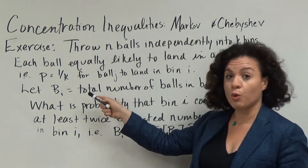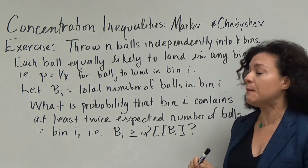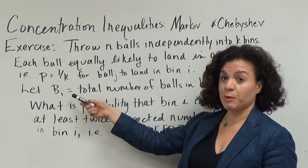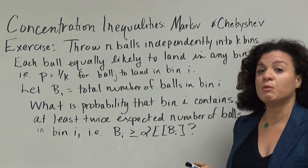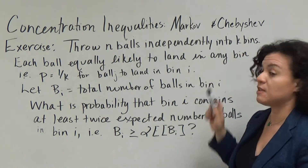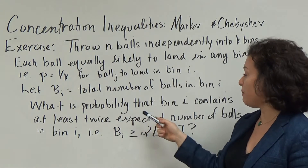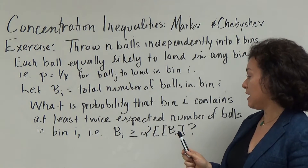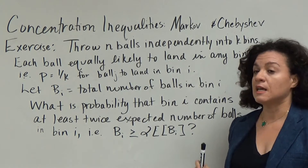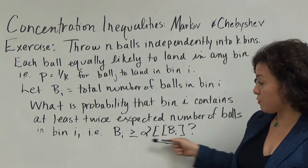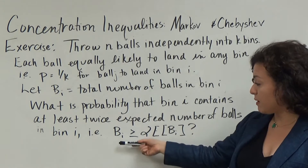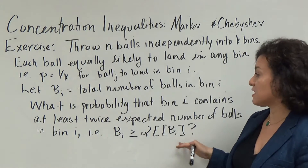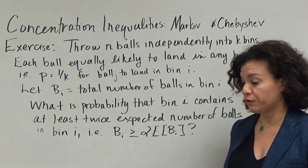We let the total number of balls in bin i be the random variable bi. The question we want to answer, applying Markov's and Chebyshev's inequality, is: what is the probability that bin i contains at least twice the expected number of balls — i.e., P(bi ≥ 2·E[bi])?